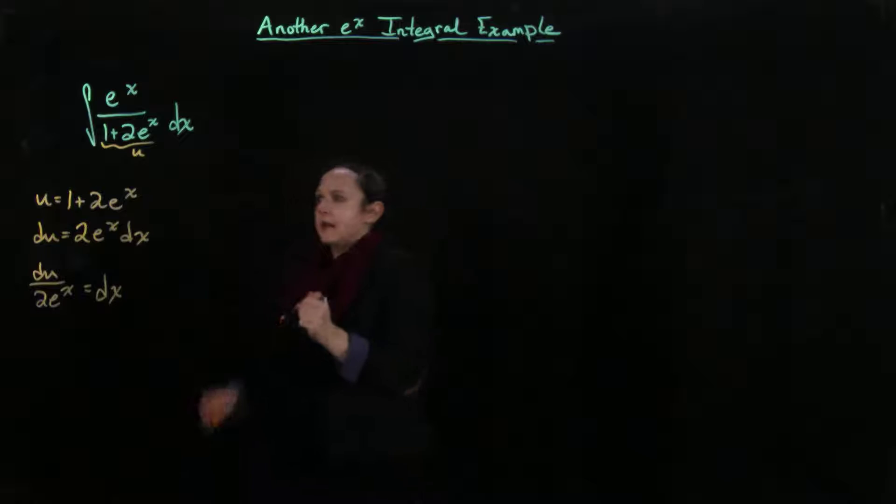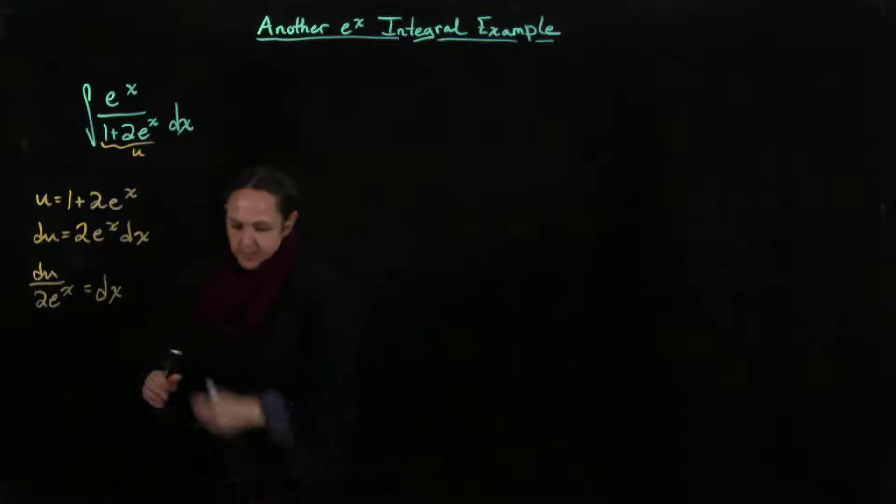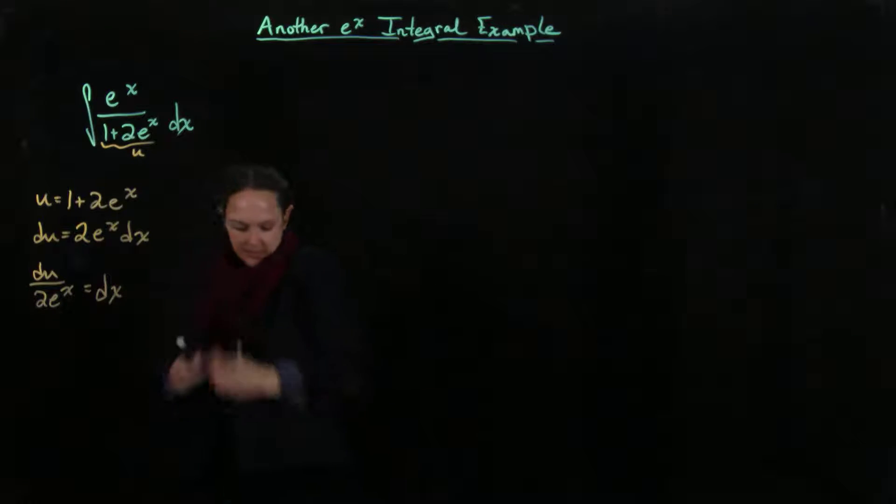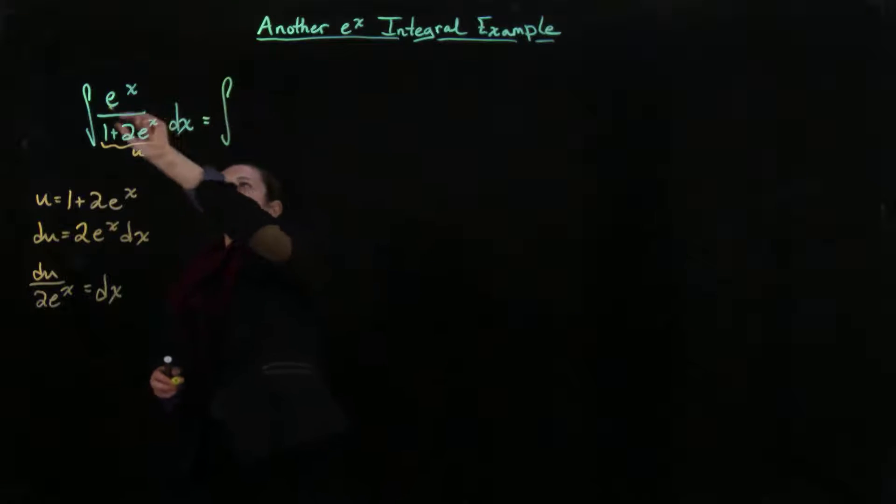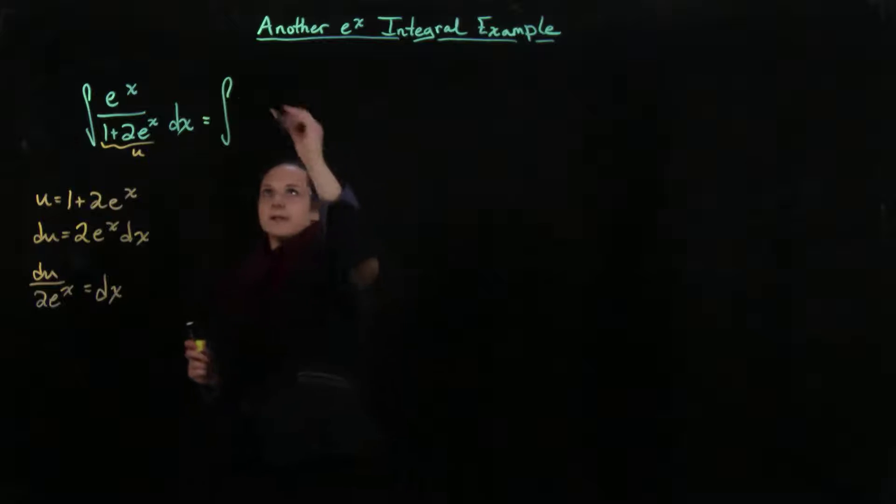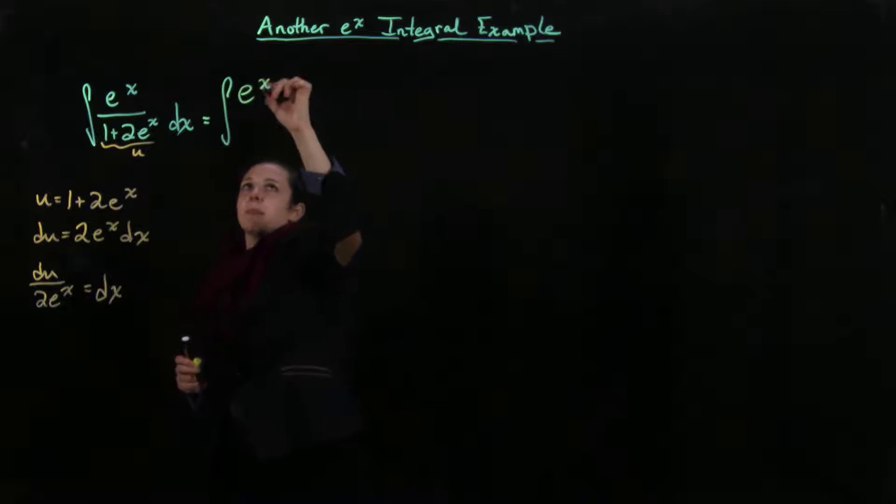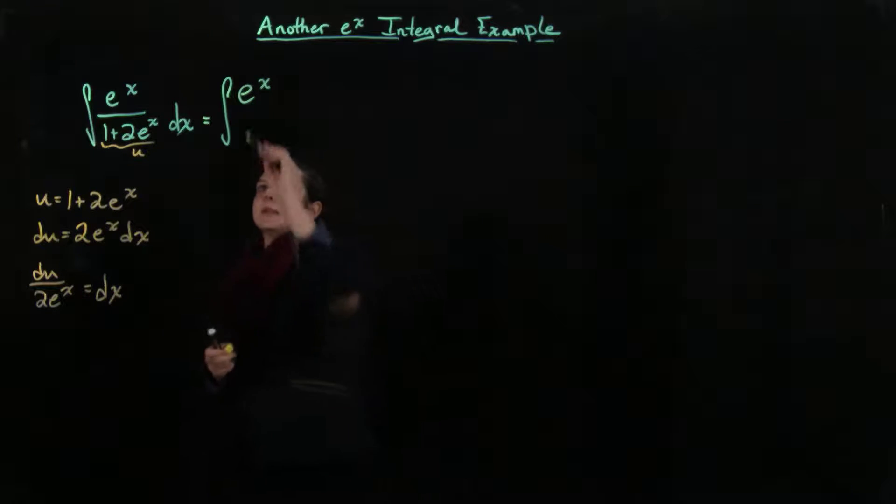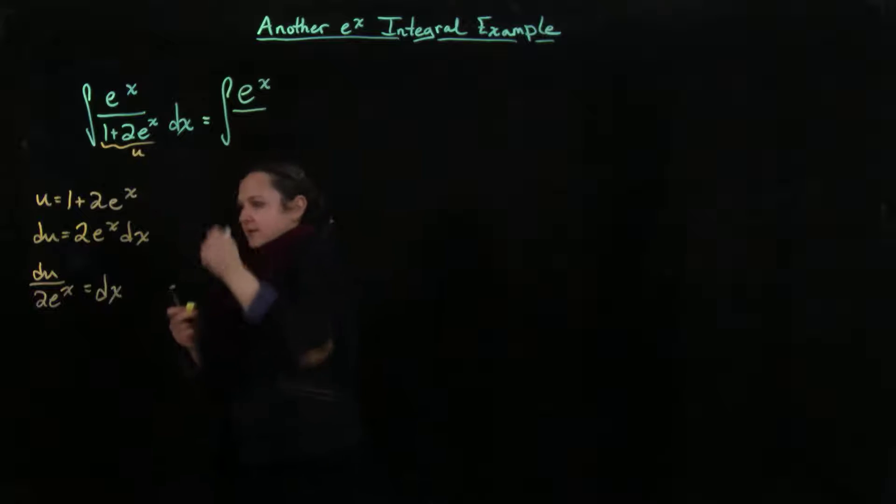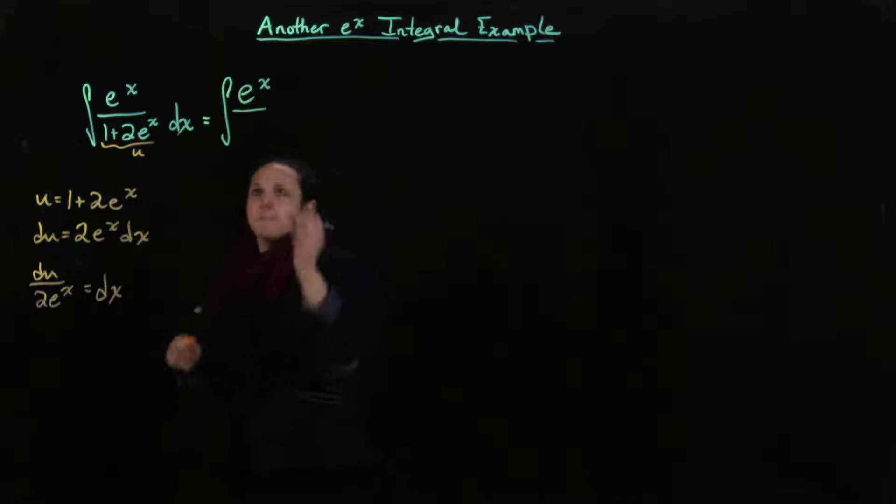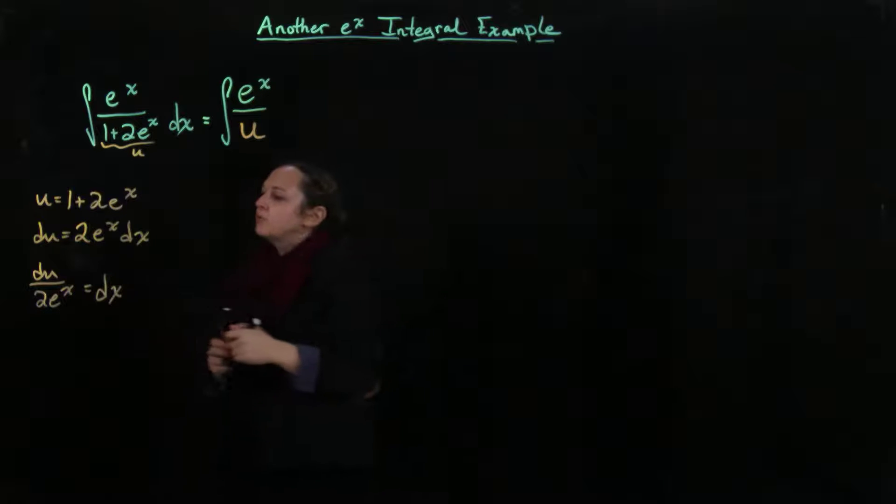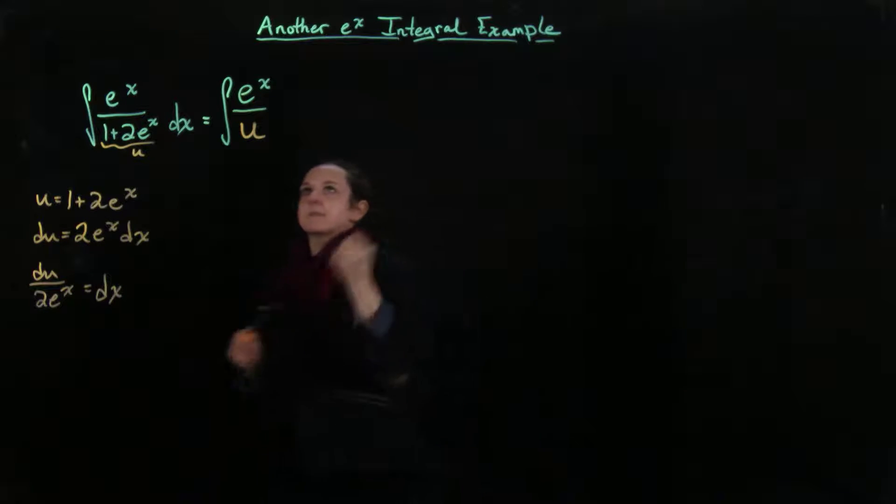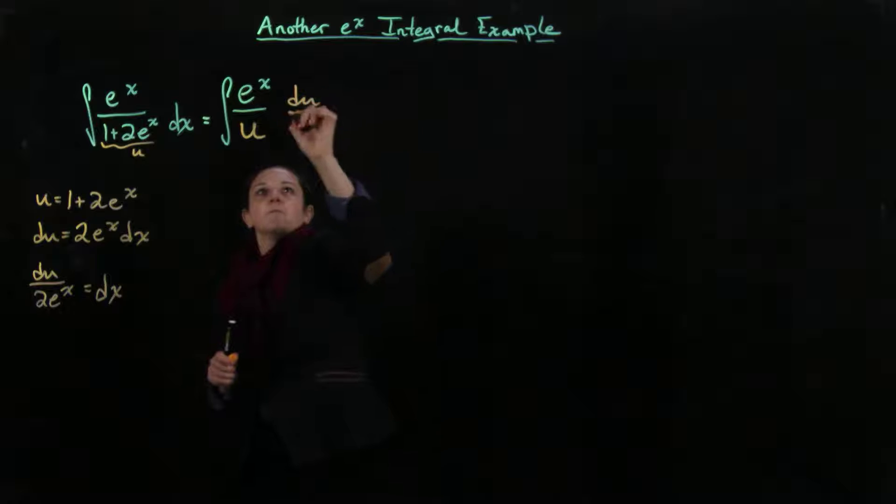And then I can go ahead and substitute all of that in here, so I'm going to get, oops, wrong color, that this is going to equal the integral of, and usually the derivative part, we leave that because it's going to kind of cancel. So we get e to the x, and then we have our u, so this is our u. And then from over here, we have du divided by 2 e to the x.